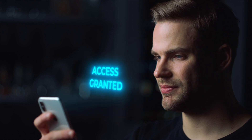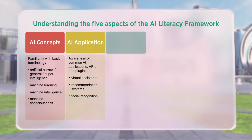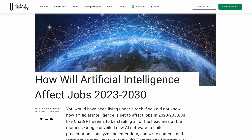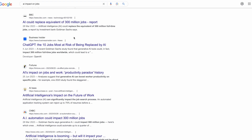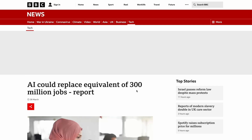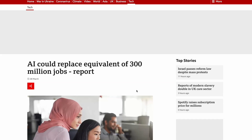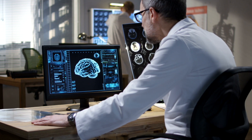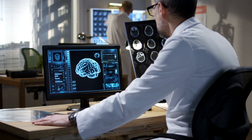Three, AI hype versus reality: differentiate between the potential of AI and marketing hype, to have a realistic expectation of what AI can and cannot do.